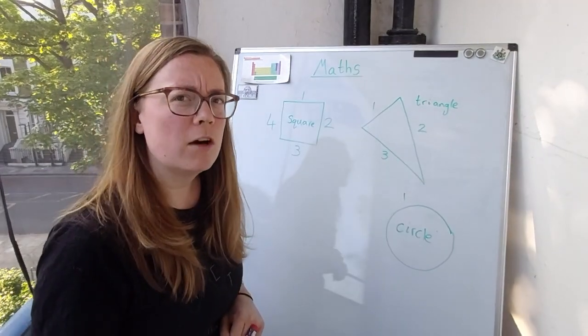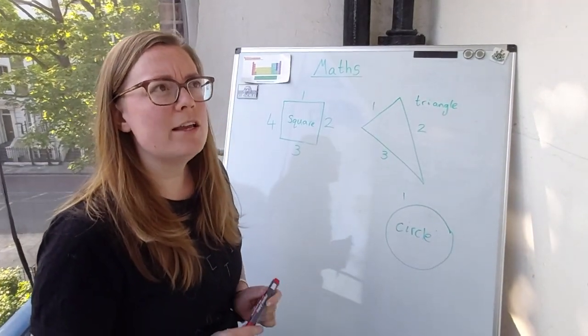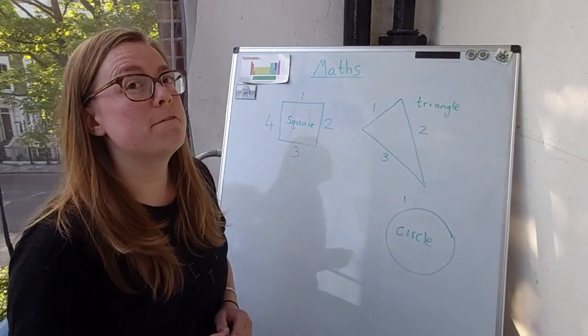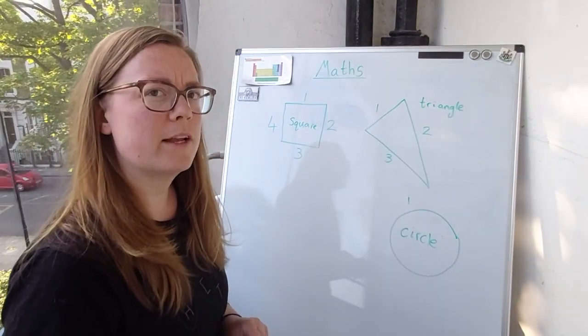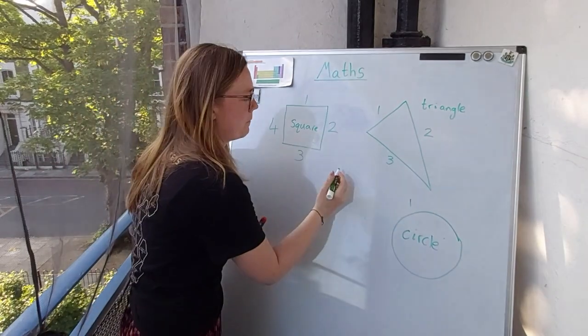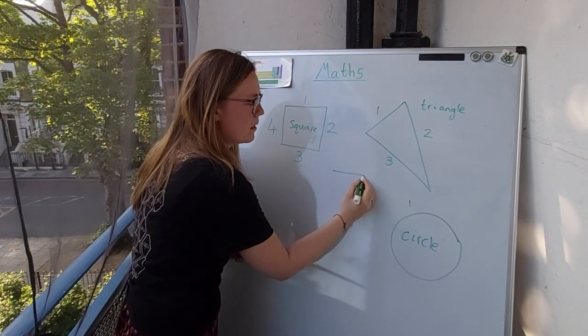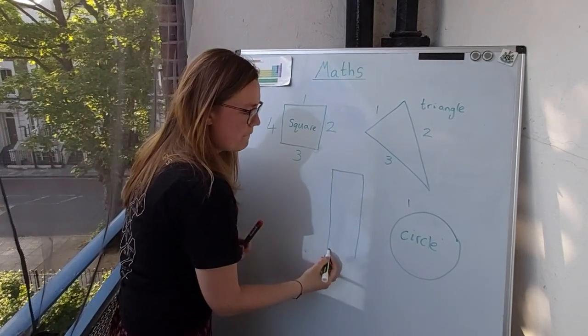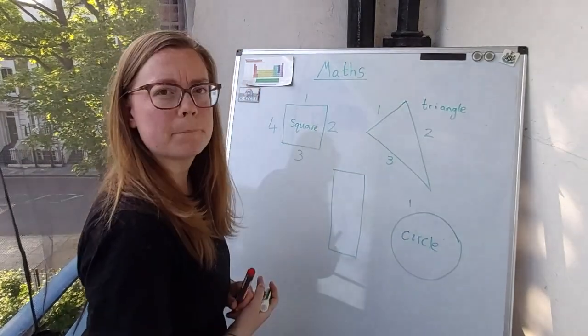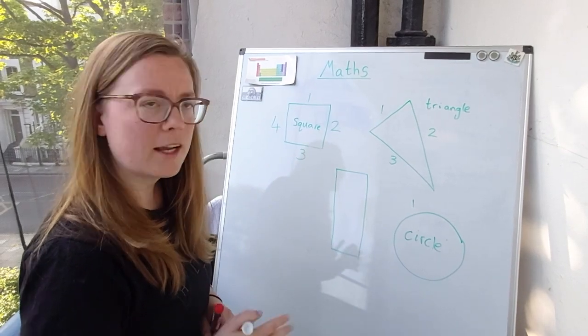You might have been thinking of another shape though, because I said that my shape had four straight sides. What other shape has four straight sides? Let me have a look. One, two, three, four. One, two, three, four. What shape is that? Can you tell me?